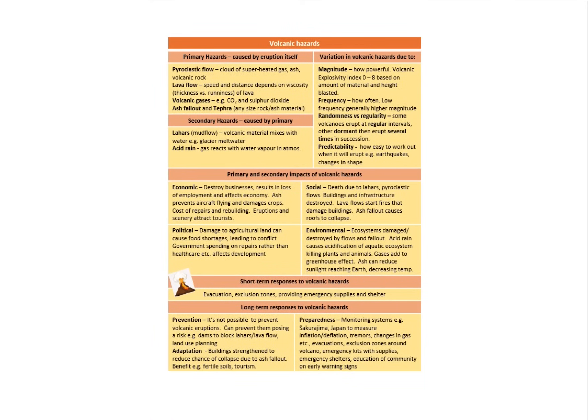So if I start considering my volcanic hazards, we group everything in terms of primary and secondary. Primary is going to happen straight away, secondary happens afterwards. So primary here would be your pyroclastic flow, your superheated gas, your ash fallout. Secondaries would be things like your acid rain and your lahars.